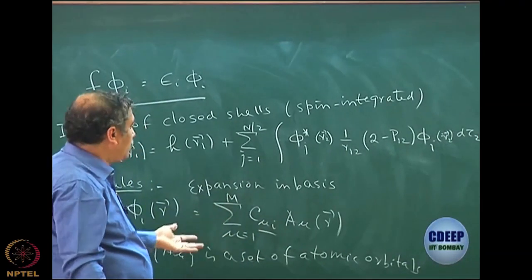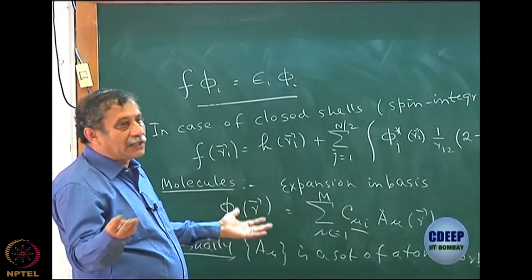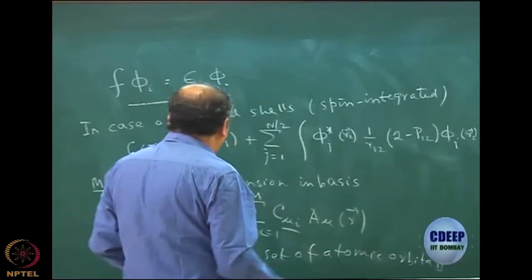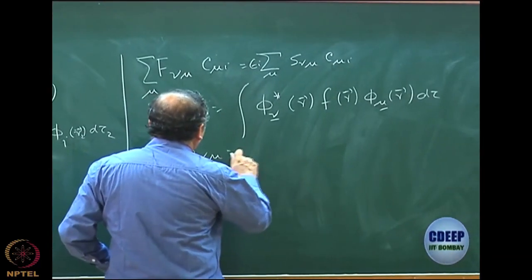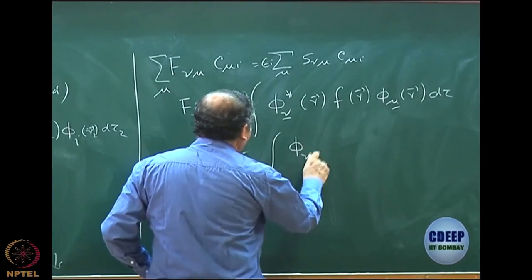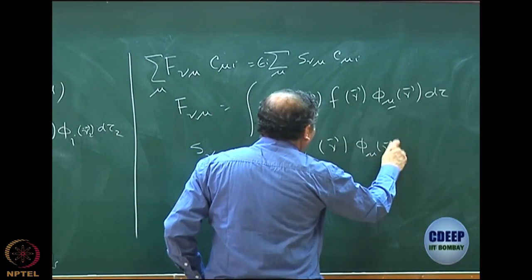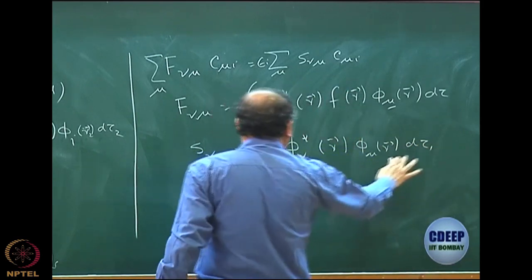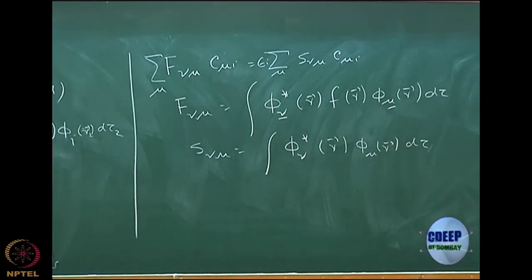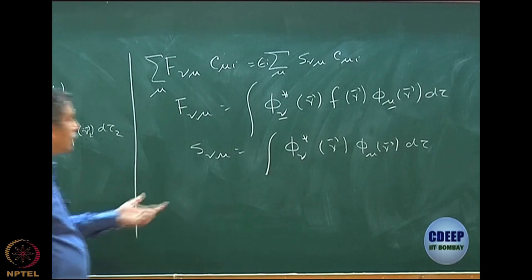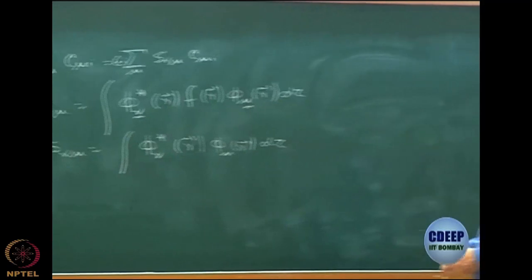S_νμ is the overlap integral: S_νμ = ∫ χ_ν*(r) χ_μ(r) dτ. If the basis functions are not orthonormal, S_νμ will not be the Kronecker delta. Only if they form an orthonormal set will S_νμ = δ_νμ, but in general they are not.